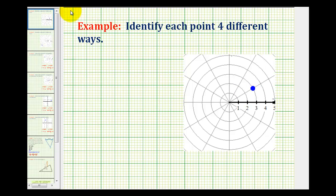Remember in polar coordinates, an ordered pair is given by r comma theta, where r is the directed distance from the pole, and theta is the directed angle from the positive x-axis.